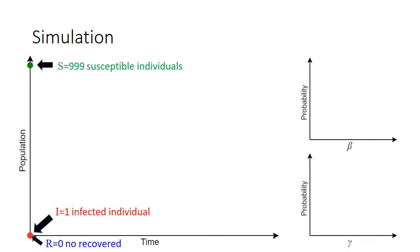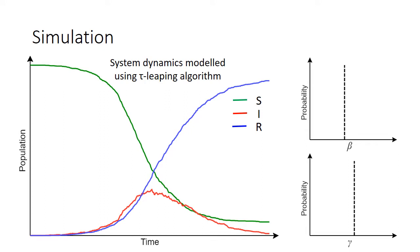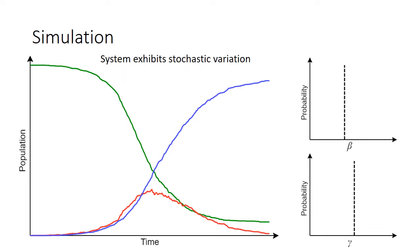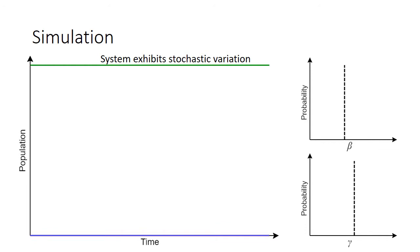Such a model can easily be simulated from. Suppose we start with 1000 individuals, one of which is initially infected. We select a suitable set of parameter values for beta and gamma, and system dynamics can be simulated, in this case using the tau-leaping algorithm, which is a discrete time approximation to the Gillespie algorithm. Typical epidemic behaviour is observed in which the number of infected individuals, denoted by the red curve, grows rapidly, depleting the susceptible population until herd immunity is realised, at which point the epidemic dies out. It is important to note that this system exhibits significant stochastic variability, so if the simulation is repeated with exactly the same initial conditions, different dynamic behaviour is observed, and sometimes no epidemic is observed at all due to epidemic extinction.